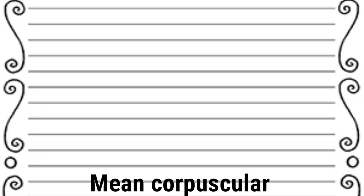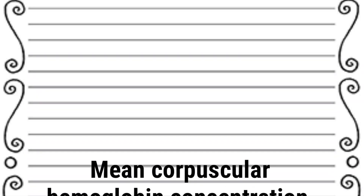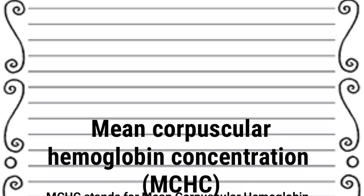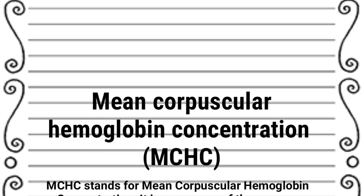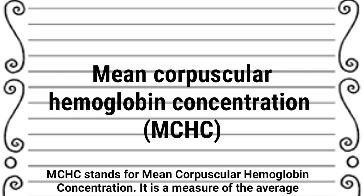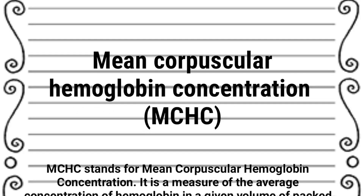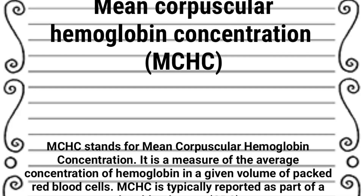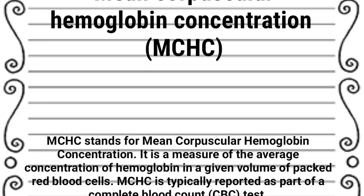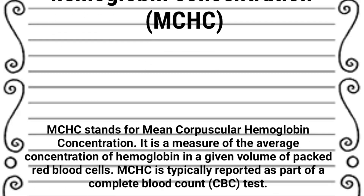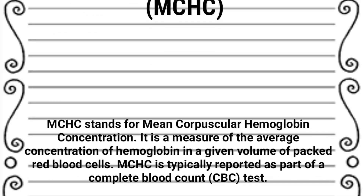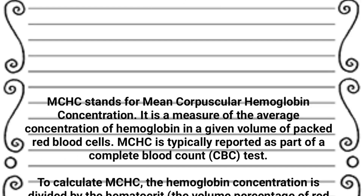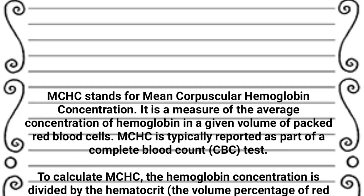MCHC stands for Mean Corpuscular Haemoglobin Concentration. It is a measure of the average concentration of hemoglobin in a given volume of packed red blood cells. MCHC is typically reported as part of a complete blood count test.